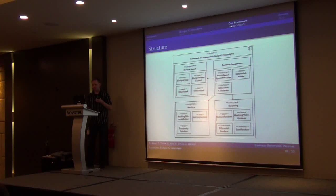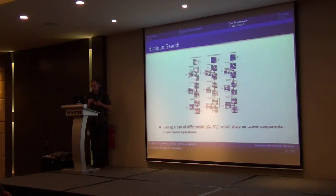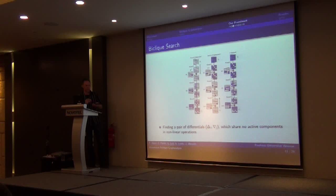Then for the remaining rounds to identify a matching which minimizes the number of parts which have to be recomputed in those rounds and to give a visualization. The task of biclique search for independent bicliques can be really reduced to finding a pair of a set of differentials delta_i and nabla_j which have active components in non-linear operations.